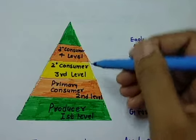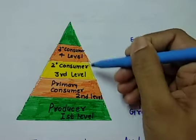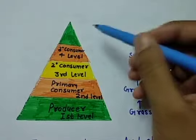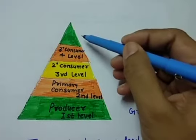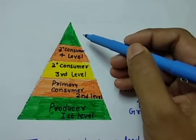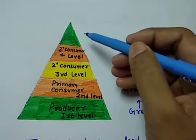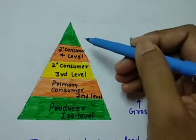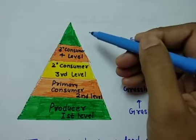At the highest trophic level, the amount of energy that has reached will be very less compared to what was originally present at the producer level.